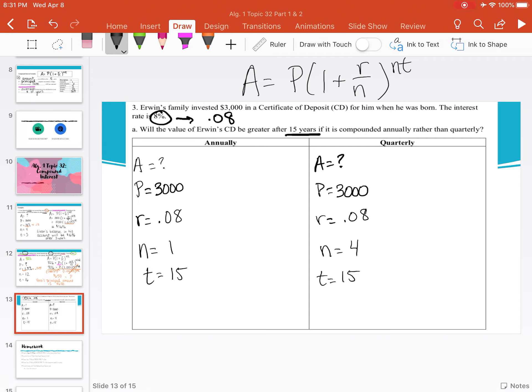Now we're going to plug into our formula. We have A equals 3000 times 1 plus 0.08 divided by 1 to the 1 times 15 power. Whereas for quarterly, we have A equals 3000 times 1 plus 0.08 divided by 4 to the 4 times 15 power.